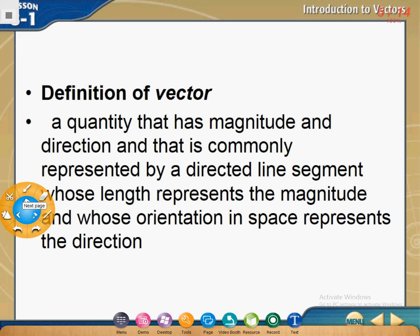The definition of a vector is a quantity that has magnitude and direction, and it's commonly represented by the directed line segment whose length represents the magnitude. The definition of magnitude is the length of this vector, and the orientation is the direction.